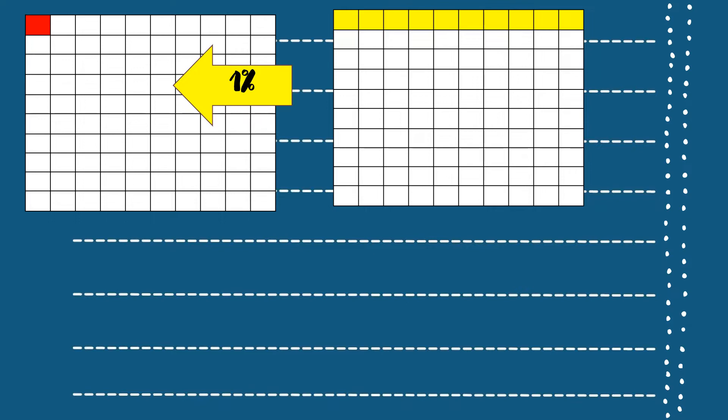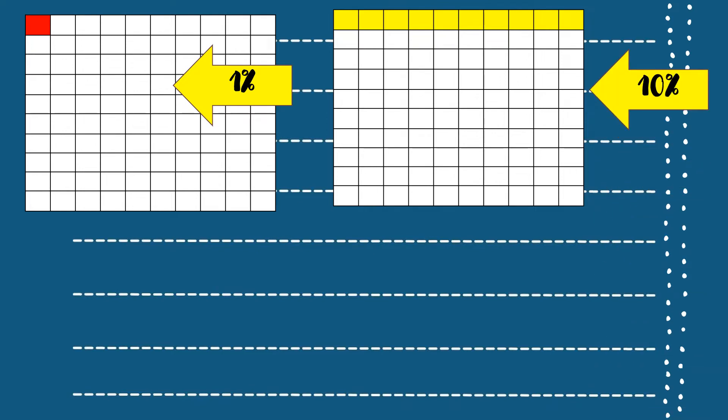Next, counting 1, 2, 3, 4, 5, 6, 7, 8, 9, 10 — we have 10 shaded squares out of 100. Therefore, we have 10%. Very good.